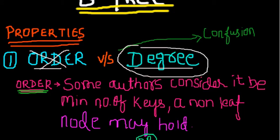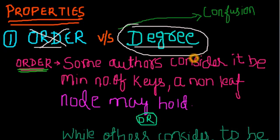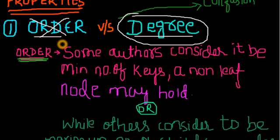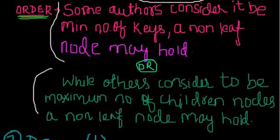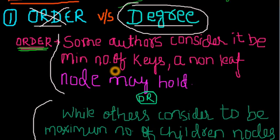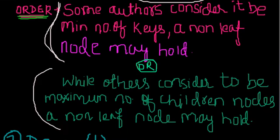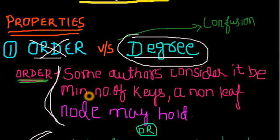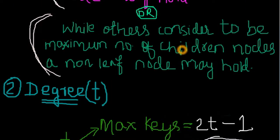No one talks about order, so just forget it. If you Google what is the order of B-trees, you'll get different definitions - it's not specific. Everything is defined by degree. Second problem: what is degree?